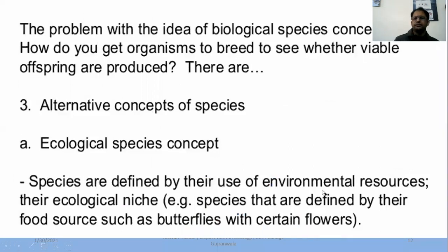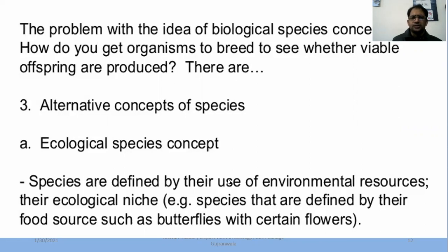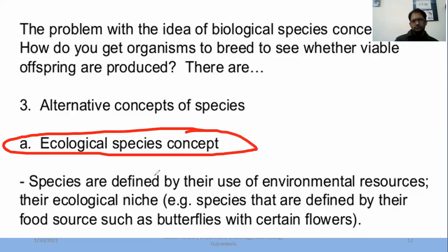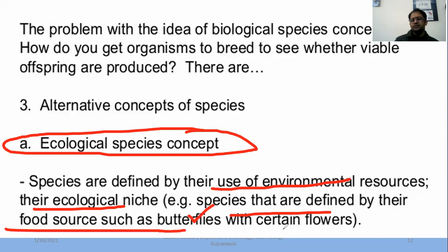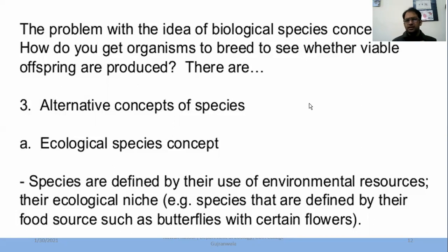A problem with the biological species concept is: how do you get organisms to breed to see whether viable offspring are produced or not? An alternative species concept is the ecological species concept, where species are defined by the use of their environmental resources — their ecological niche. For example, species defined by their food source, such as butterflies associated with certain flowers.